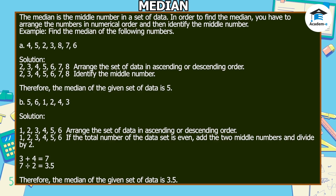Here's another example: 5, 6, 1, 2, 4, and 3. To solve, arrange the set of data in ascending or descending order. If the total number of the data set is even, add the two middle numbers and divide by 2. Since the two middle numbers are 3 and 4, add them and divide by 2. Therefore, the median of the given set of data is 3.5.